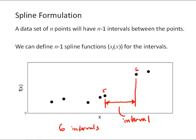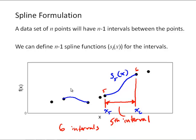We can define a spline function for each interval. For example, the fifth spline function s₅(x) is only valid between x₅ and x₆. Similarly, we define another spline function s₂(x) that is valid in the second interval between x₂ and x₃. Each spline function is a separate polynomial defined only over its respective interval.